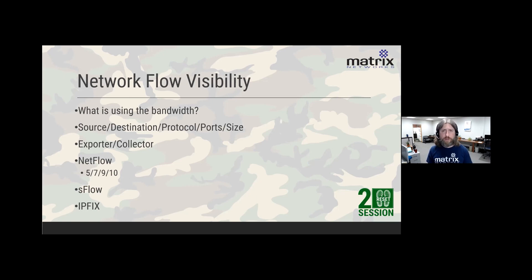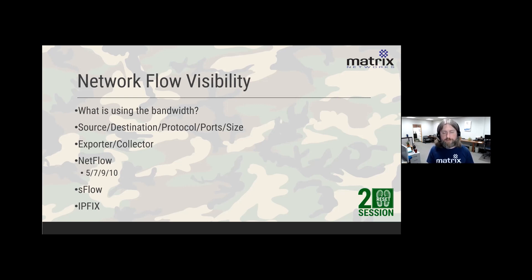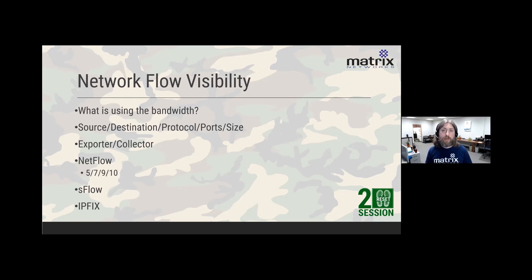Flow information is really just metadata — it doesn't include the payload. In a normal Ethernet frame of 1500 bytes, only about 32 bytes is header; the rest is payload. Flow data consists of the source IP address, destination IP address, protocol, source and destination port numbers, and the size. These are generally all layer three, so flow information is a layer three function.